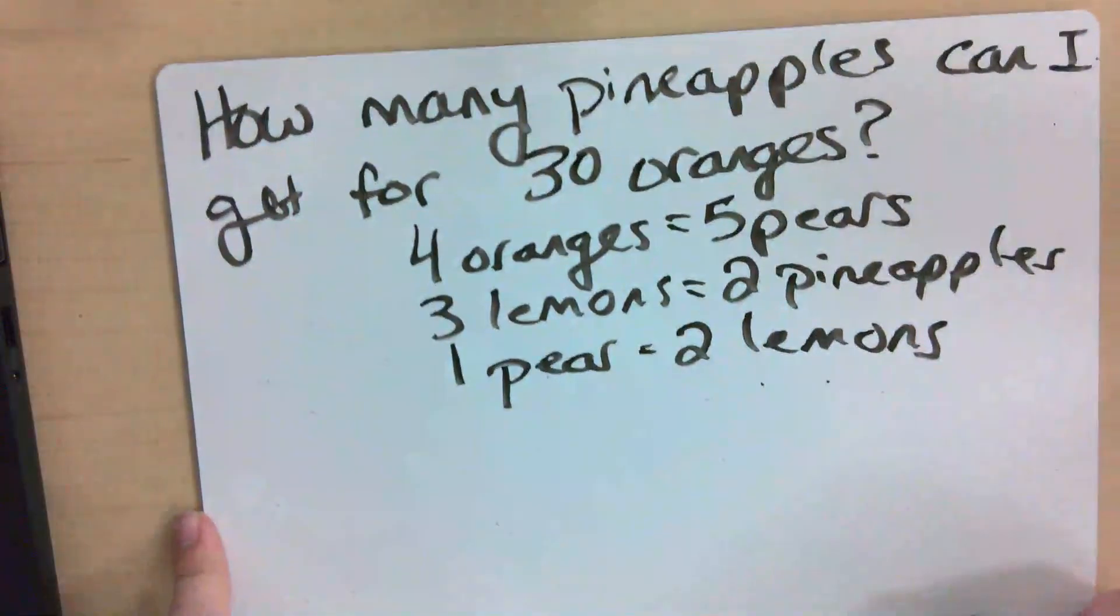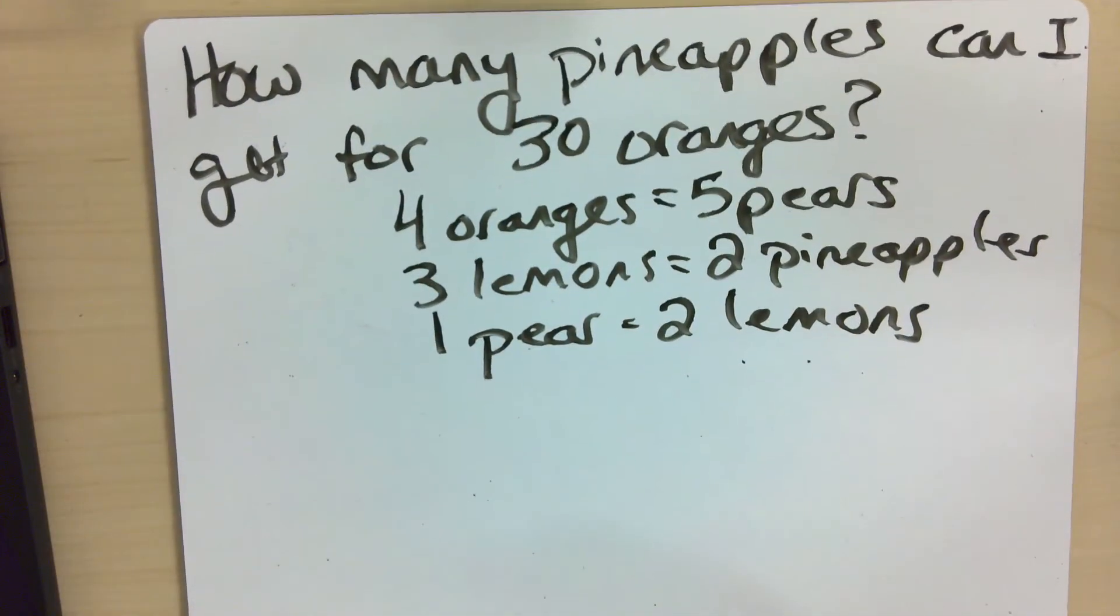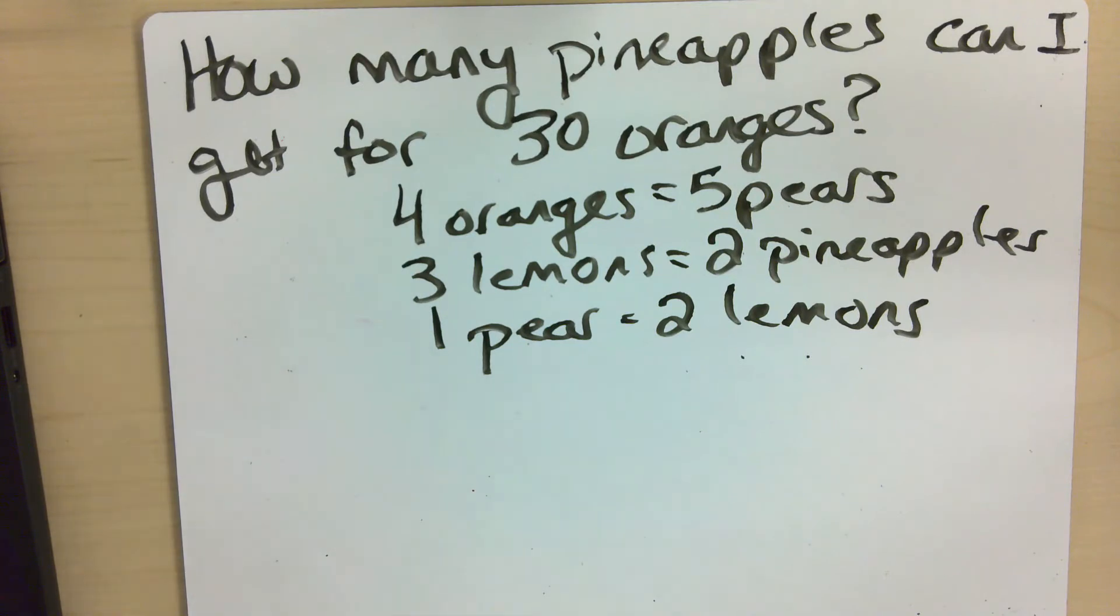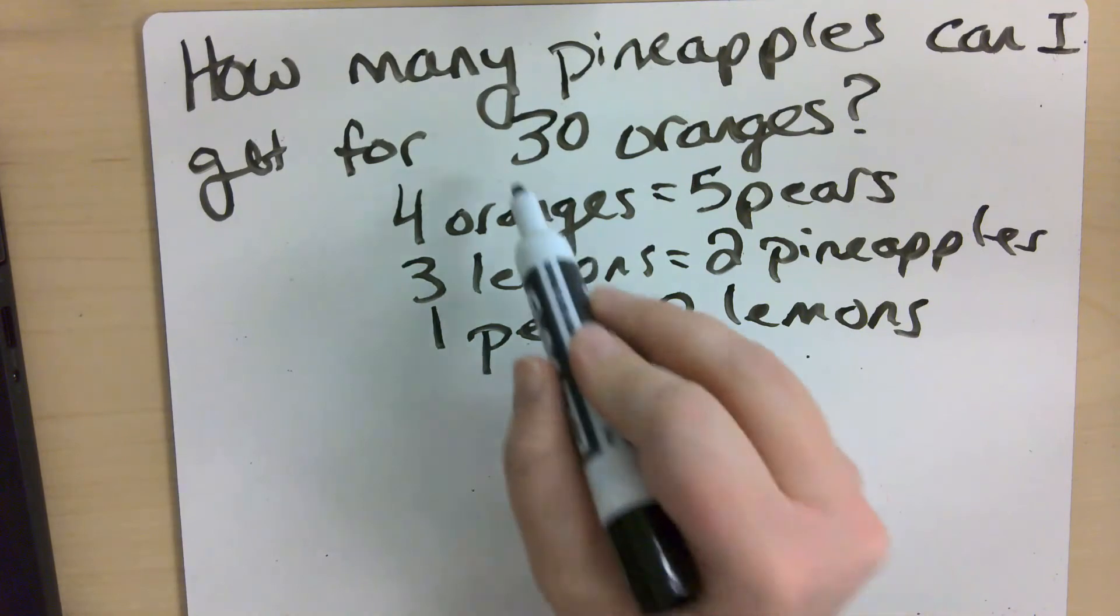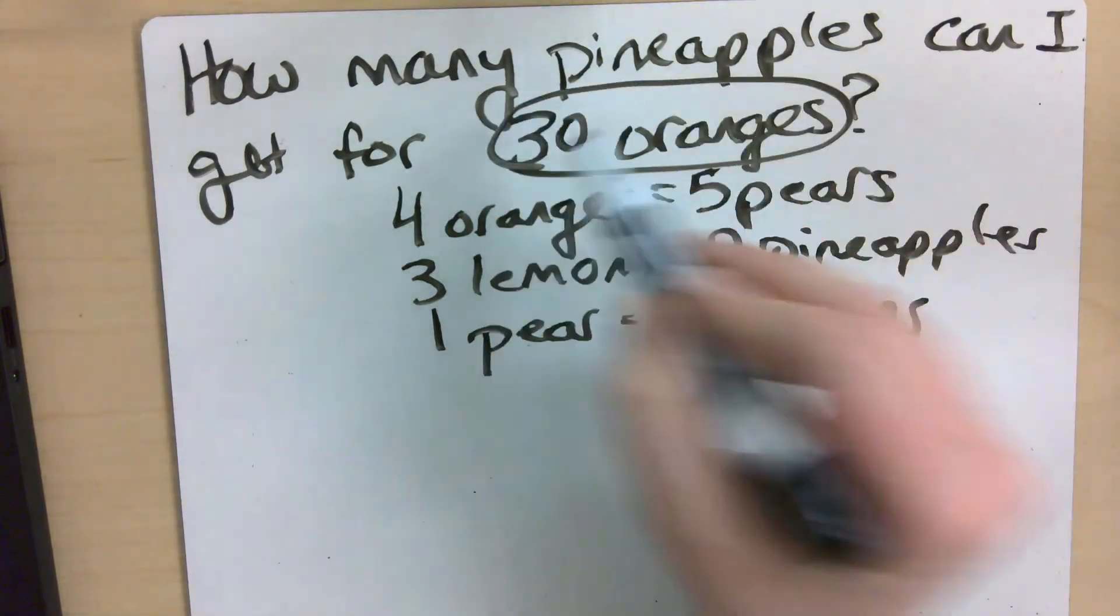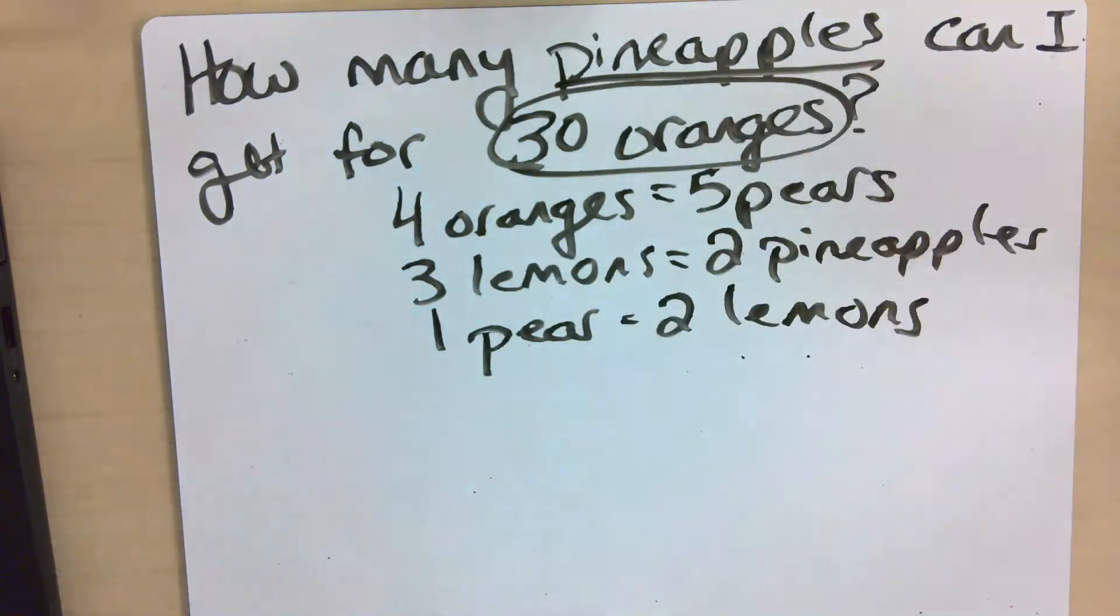So I'm going to show you another example, and this is a completely ridiculous example. And imagine that we live in a dystopian future where we have a fruit-based economy and we're trading fruit for each other based on these conversion factors. So in this fake fruit economy, I have these conversion factors, and I have a bunch of oranges, 30 to be exact, and I want pineapples because pineapples are better than oranges.